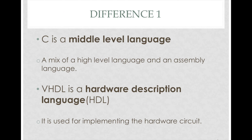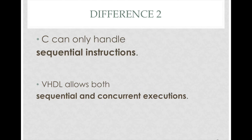Let us now talk about a few differences between a general computer programming language and a hardware description language. C is a middle level language, which is a mix of a high level language and an assembly language. VHDL is a hardware description language used for implementing hardware circuits. Another difference is that C can only handle sequential instructions, whereas VHDL allows both sequential and concurrent executions.